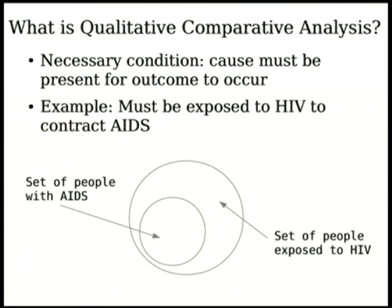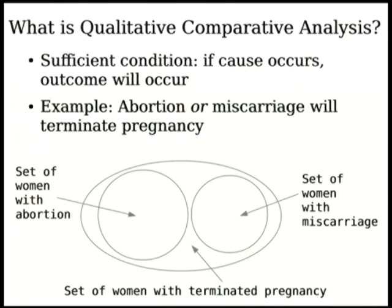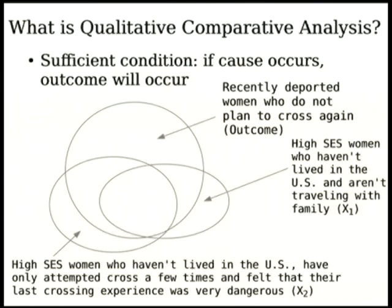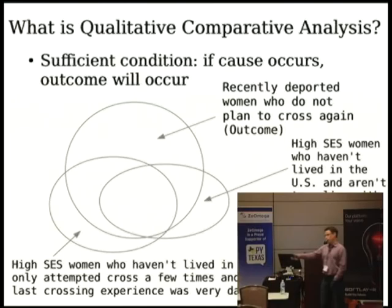There are two types of relationships we're really concerned with. One is necessary conditions, the second is sufficient conditions. A necessary condition is something that must occur in order for the outcome to occur. A sufficient condition means if the cause is there, the outcome will occur. For example: you have to be exposed to HIV to contract AIDS — that's a necessary condition — but just because you're exposed to HIV doesn't mean you'll contract AIDS. A sufficient condition example: for a pregnancy to terminate, you could have an elective abortion or a miscarriage — two sufficient conditions. There are other ways for pregnancies to terminate as well, such as stillbirth.